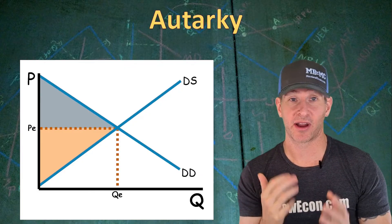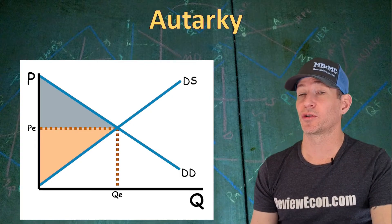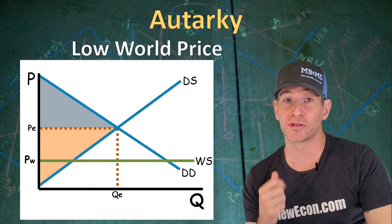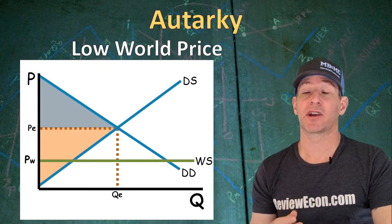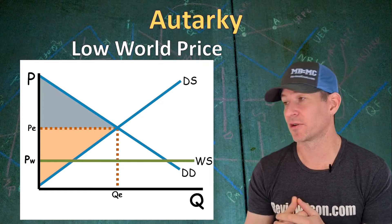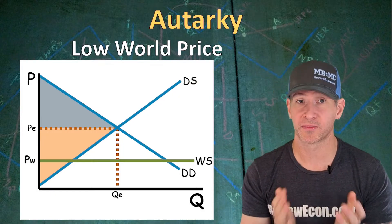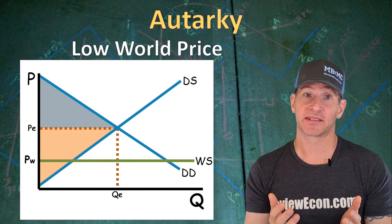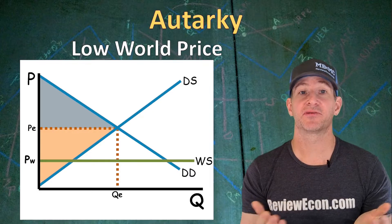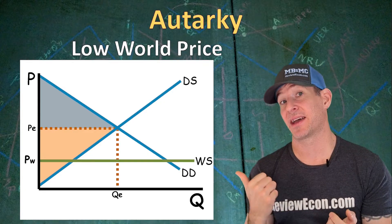We have the domestic supply and domestic demand here and the domestic equilibrium. But there is a global market for this product. If that product has a world price that is lower than the domestic equilibrium price, we are going to get a world supply curve within this market, set at the price determined by the world market. We are assuming that this country is too tiny to impact the overall supply and demand within the global market, so this economy can purchase as much quantity as it wants at the world price PW. But if this country stays in autarchy, it will lose out on the benefits of global trade at that lower world price.